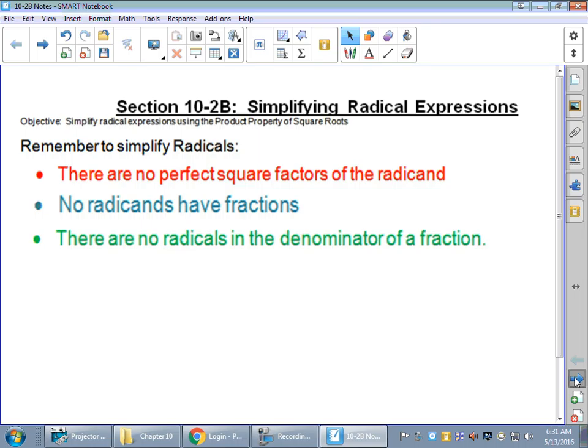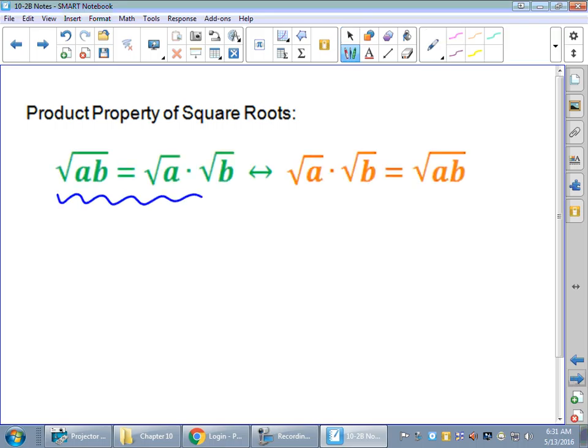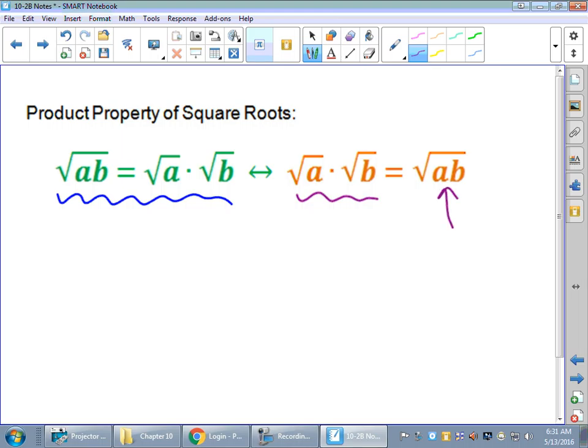The product property of square roots - remember we said last time if we've got some number as the radicand, we can break that up into two pieces. One of the pieces should be a perfect square because then we can simplify. But we can also go the other way. The other way means that if we've got two numbers being multiplied and those numbers are both under a radical, multiply them together and then break down after you multiply.